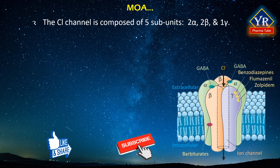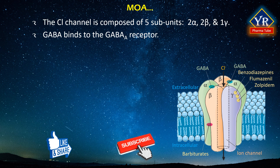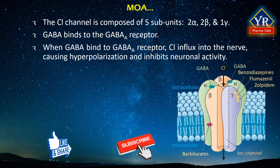The chloride channel is composed of five subunits — 2-alpha, 2-beta, and 1-gamma — which form a circular channel that, when open, allows chloride ions to pass through the nerve membrane into the neuron. GABA binds to a specific site on the channel referred to as the GABA-A receptor. When GABA binds to the GABA-A receptor, the channel opens and chloride ions influx into the nerve, causing hyperpolarization. This reduces the generation of action potentials and inhibits neuronal activity.